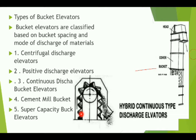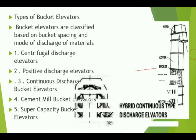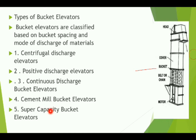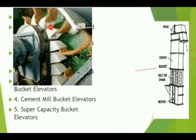To achieve continuous discharge, a series of buckets are closely placed so they are continuously dropping material. Number four is the cement mill bucket elevator, which is used in the cement industry with some specific design changes. Number five is the super capacity bucket elevator, which has a very large capacity.